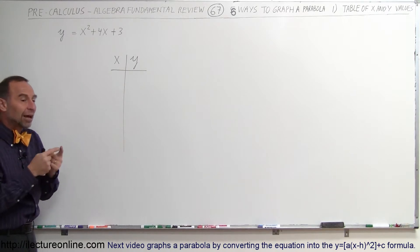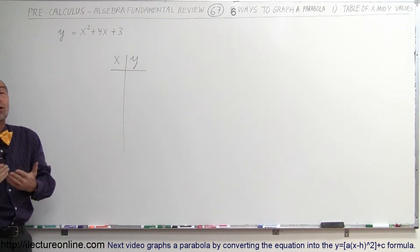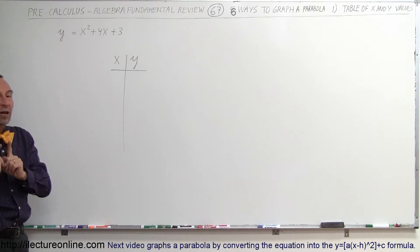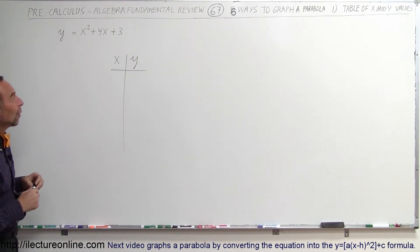What makes it a function is that there's only one value for y for each one value of x. If you plug in an x and you have two possible values for y, then it's no longer a function. In this case, this is a function for every one value of x, there's only one corresponding value for y.